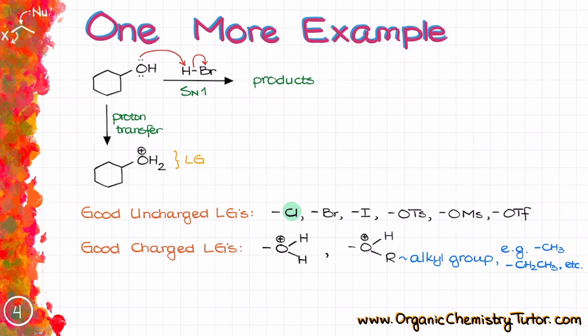So in addition to six classic neutral leaving groups that we already know, which is chlorine, bromine, iodine, tosylate, mesylate, and triflate, we now can add a few good positively charged leaving groups.